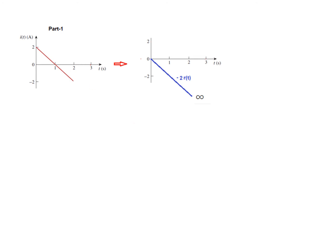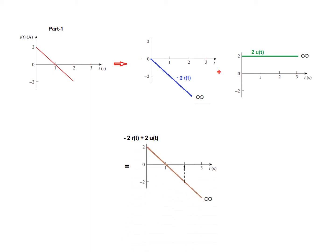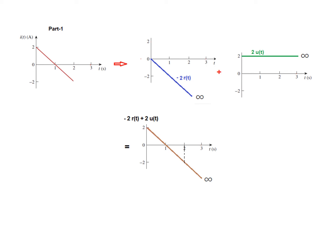Although the negative ramp looks like the target function, it starts from 0 whereas we need it to start from 2. To shift it up, we add 2 to all terms — that means adding a unit step function of value 2, which is 2u(t). This shifts the whole function up so it now reads minus 2r(t) + 2u(t). However, this function extends to t = infinity whereas we need it to end at t = 2, so we have to curtail it.